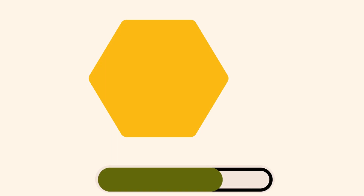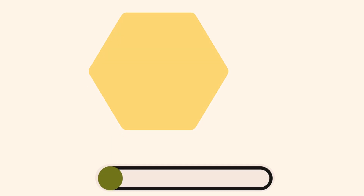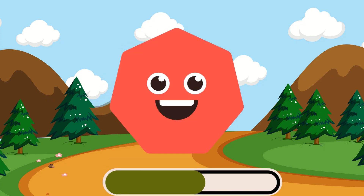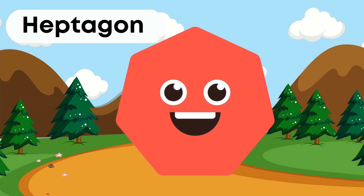Which shape is this? This is a hexagon. Hexagon. Which shape is this? This is a heptagon. Heptagon.